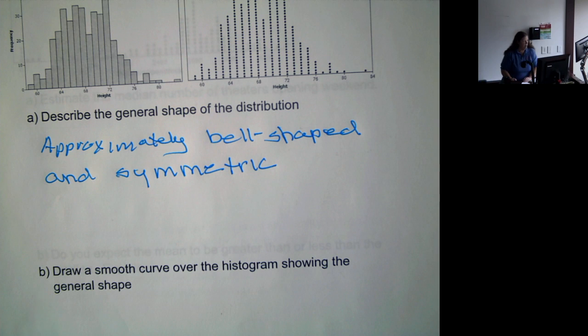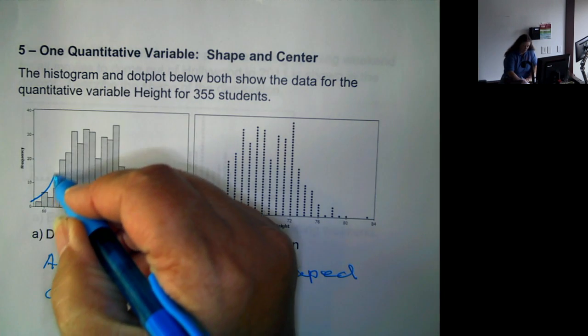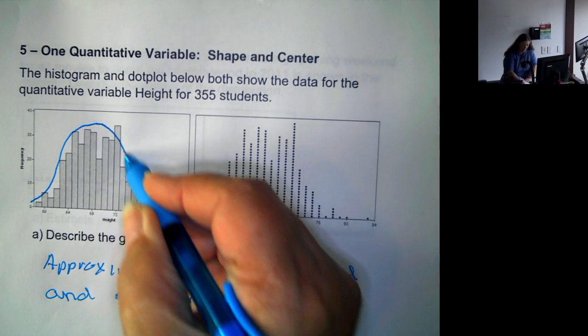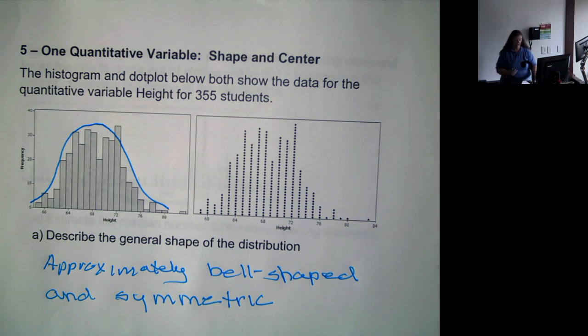Now, we're asked to draw a smooth curve over the histogram showing the general shape. So if we try to draw this smooth curve, we'll go up, peak, and then come back down. So this is showing that it's bell-shaped and somewhat symmetric.